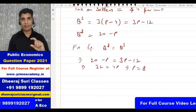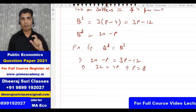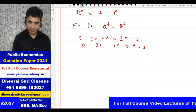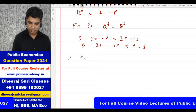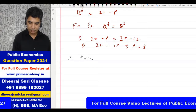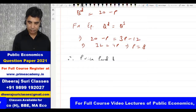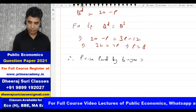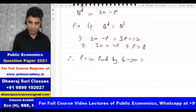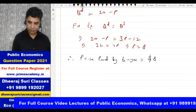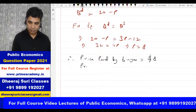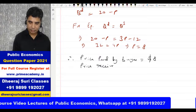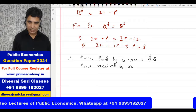The market price is $8 — this is what buyers are paying. So the price paid by buyers is $8.